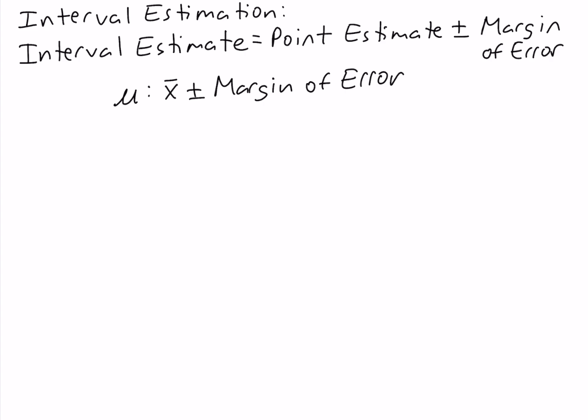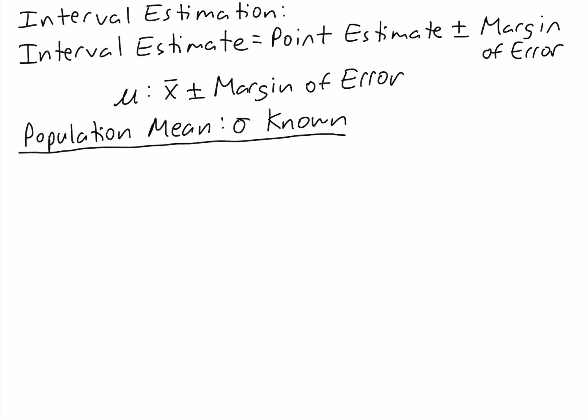We already know how to compute the sample mean, so in this section we're going to be focused on calculating the margin of error. We're going to start by constructing interval estimates of the population mean when the population standard deviation is known. This is called the sigma known case.